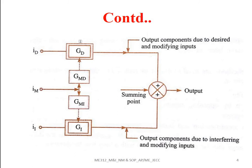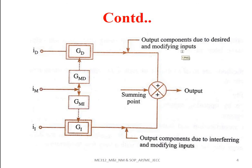Gd corresponds to the function of the desired inputs, and Gmd corresponds to the function of the modifying and desired inputs together. These two give the sum of the output components due to the desired and modifying inputs. The output components due to the interfering and modifying inputs are also represented. The total output of the system is the sum of the output components due to the desired and modifying inputs, plus the output components due to the interfering and modifying inputs.